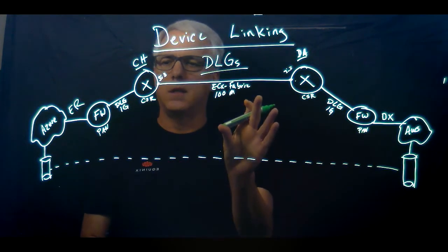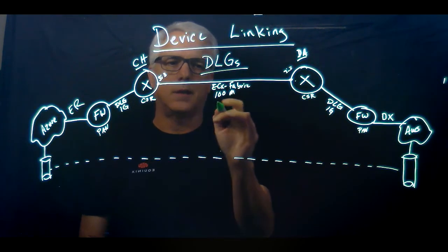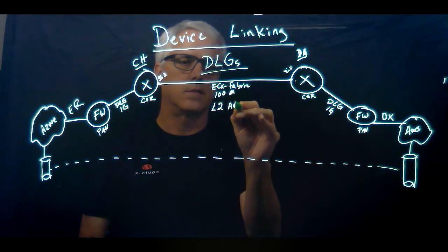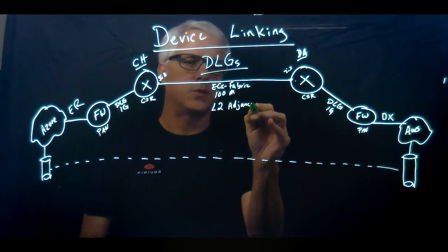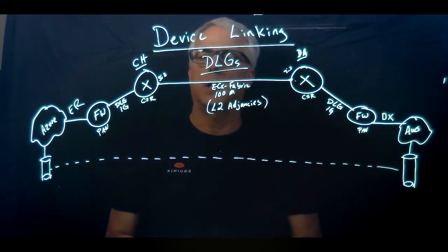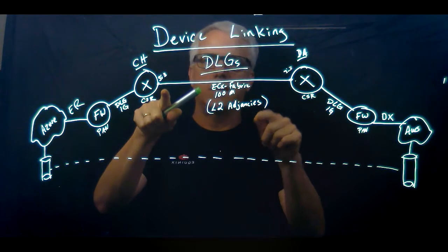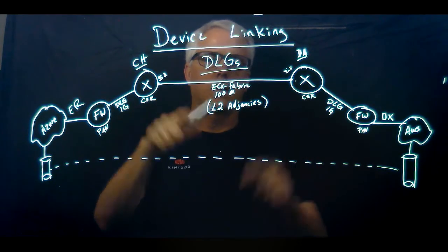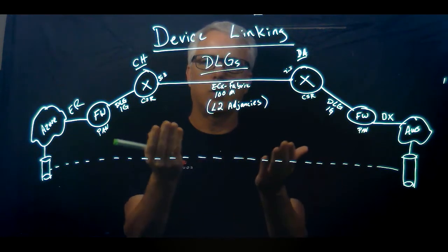The way that the DLGs work is they create layer two adjacencies. That's all they do. They put some number of interfaces in the same broadcast domain. So in this case, gig3 on the CSR in Chicago, gig3 on the CSR in Dallas, they become part of the same broadcast domain.